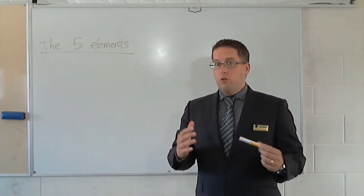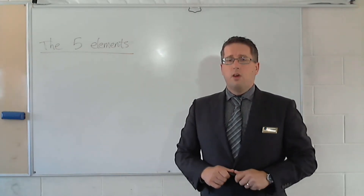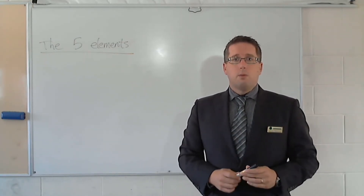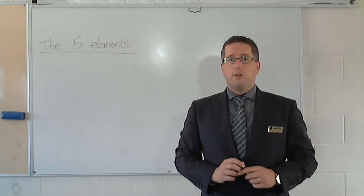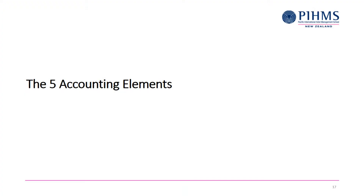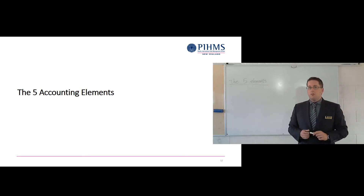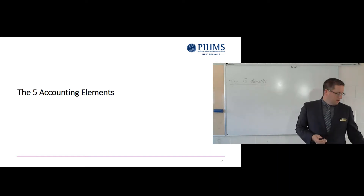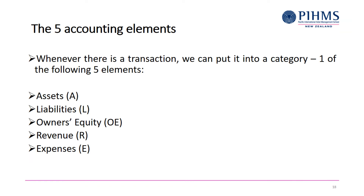We talked last time about transactions in a business. Every time there's an event that affects money or the finances of the business, we want to record it because it is a transaction. Now we start to look at this thing called the five elements. Whenever you have a transaction, there will be some effect on one or more of these elements — and an element is just another way of saying a classification or a type of thing.